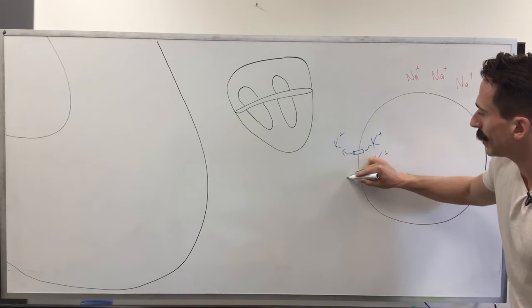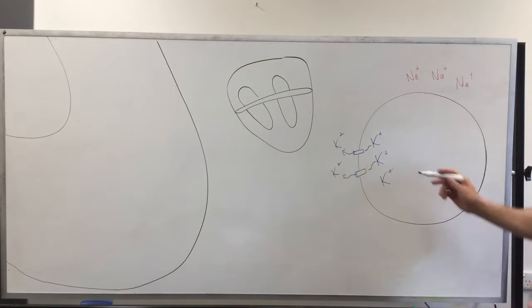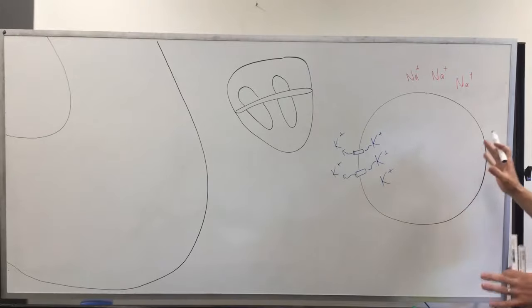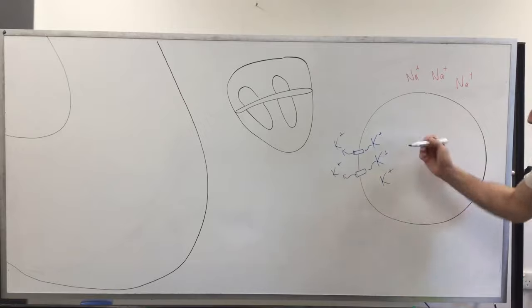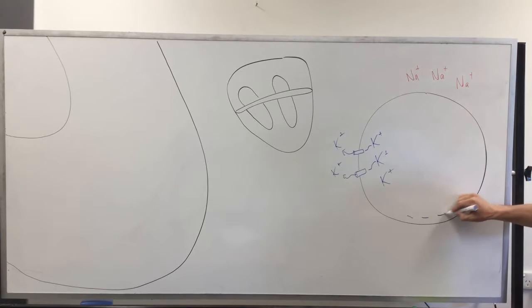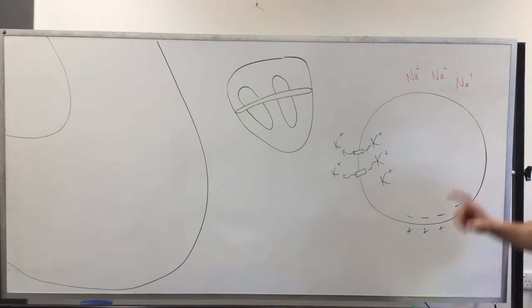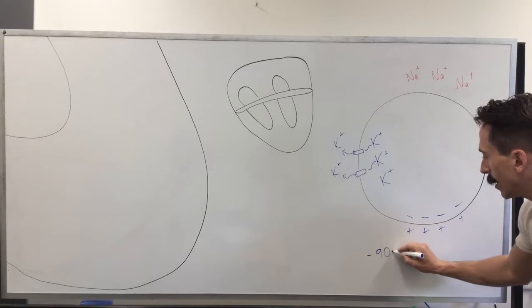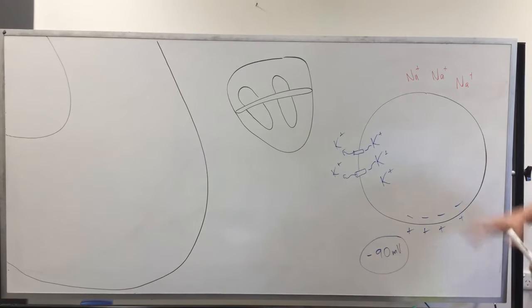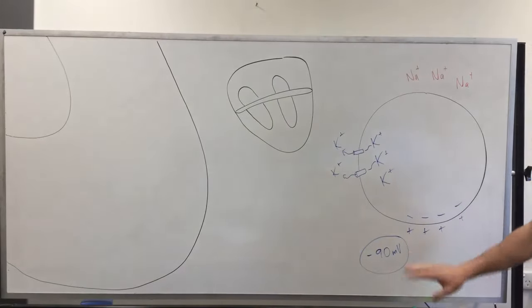Potassium has a positive charge with it and therefore carries that positive charge outside, which means when we compare what's positive and what's more negative, this positive stuff goes outside, which makes it slightly more negative inside compared to outside. The charge difference would be around about negative 90 millivolts. This is what is happening in a heart muscle cell when it's at rest, when it's not contracting. This is what we call the resting membrane potential.